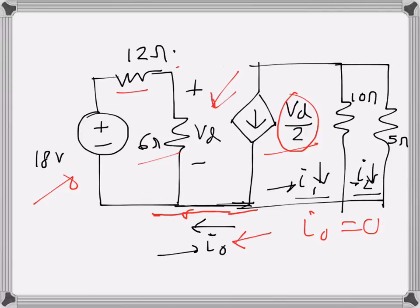So this current will be 3 amps which is downwards. I will just write 3 amperes here, current that is going downwards.